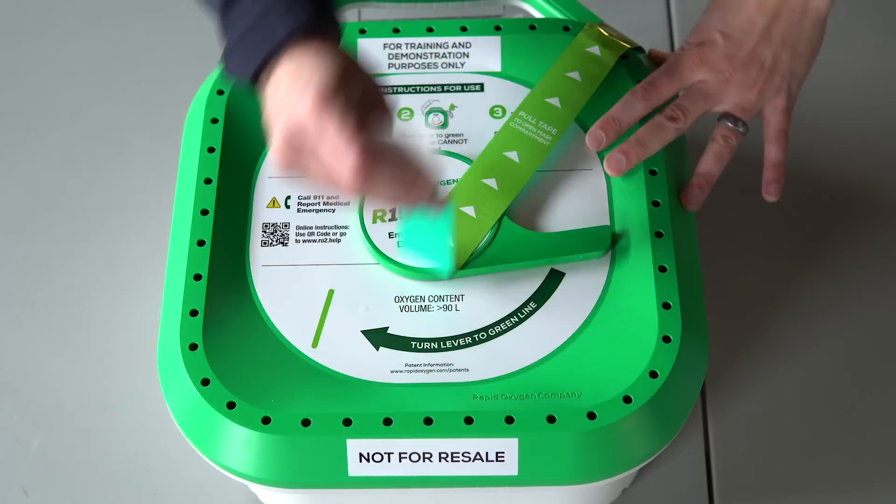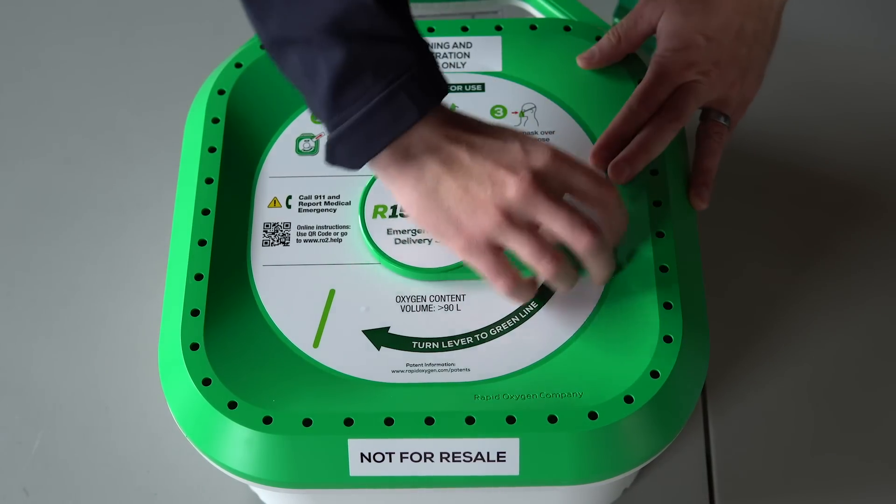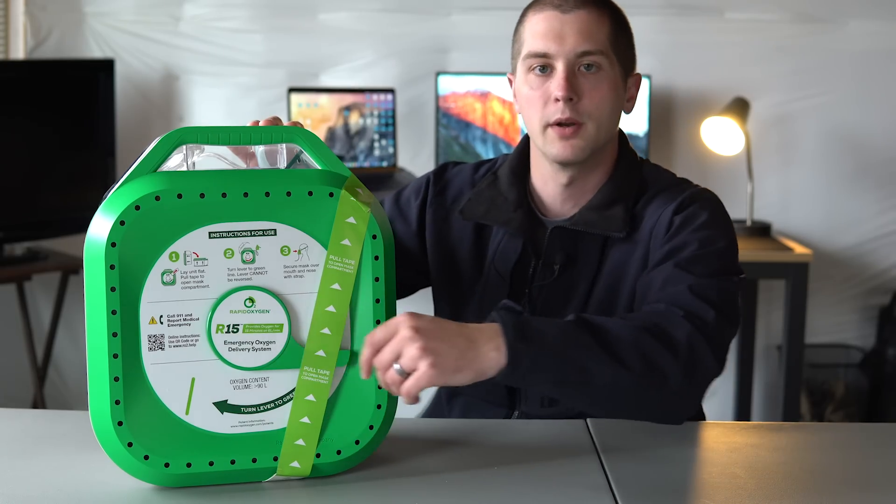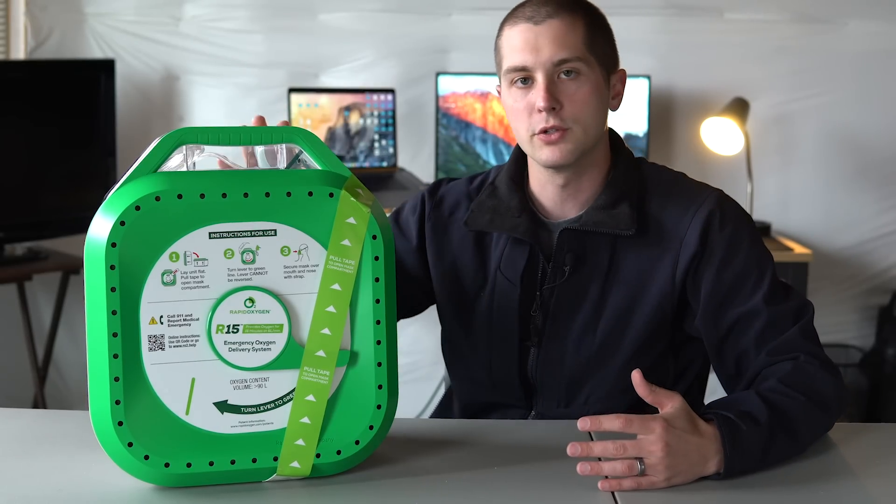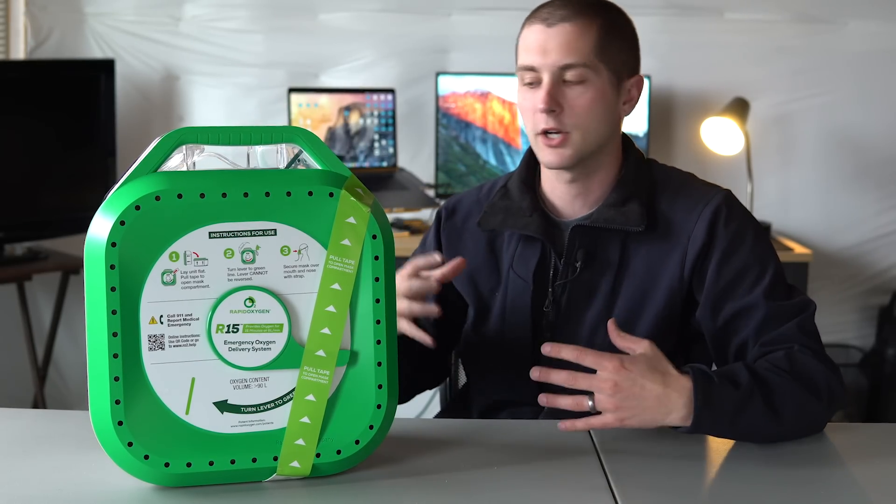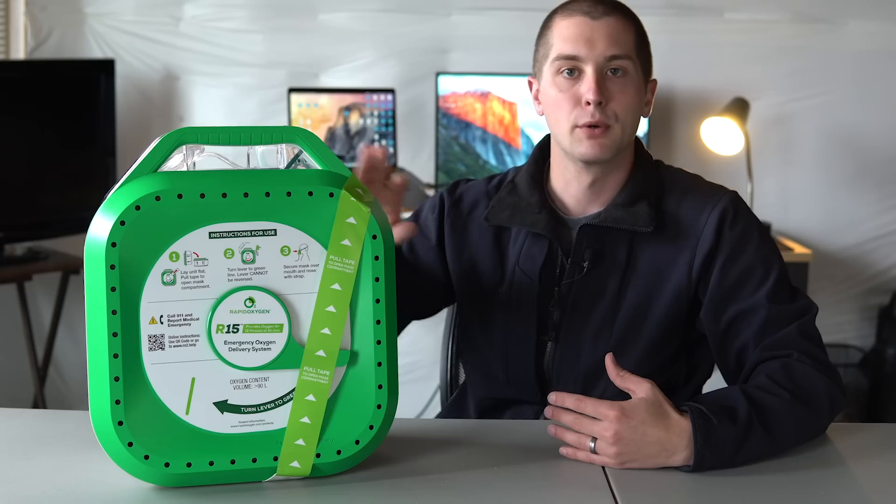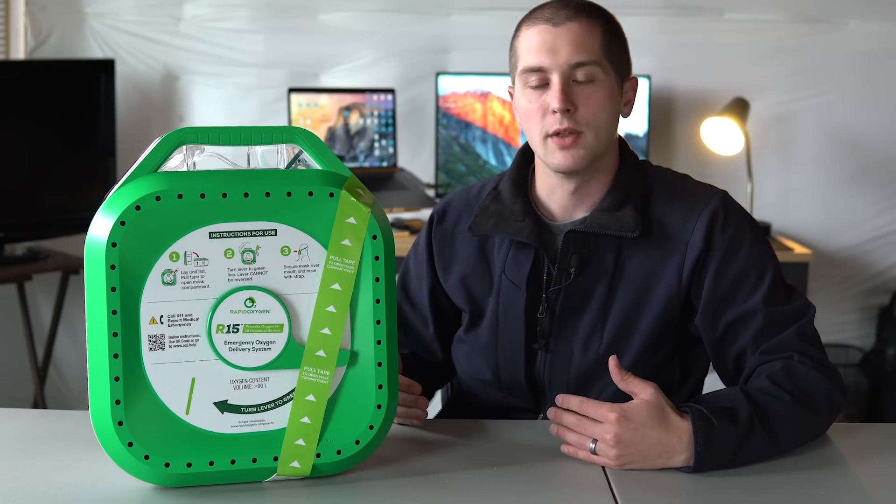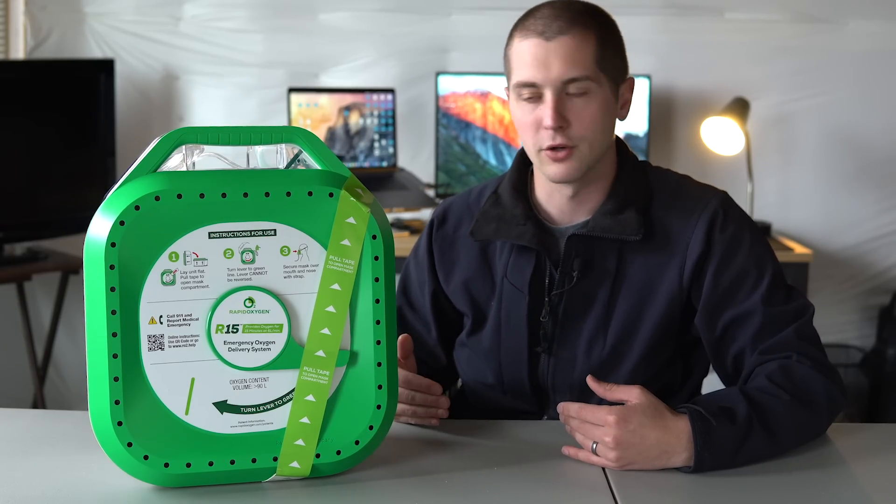When you get there, you can peel this sticker off here, peel that off, and then you take this lever and you rotate it down. And that actually combines all those ingredients and it creates a chemical reaction within this box that produces the oxygen. So that's why it doesn't need to be checked for pressure or anything like that.